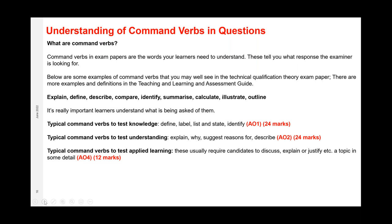Command verbs in exam papers are words your learners need to understand — they tell you what responses the examiners are looking for. Examples seen in the technical qualification theory paper include: explain, define, describe, compare, identify, summarise, calculate, illustrate and outline. Typical command verbs to test knowledge — AO1 — are define, label, list, state and identify. There are more examples and definitions in the teaching, learning and assessment guide.